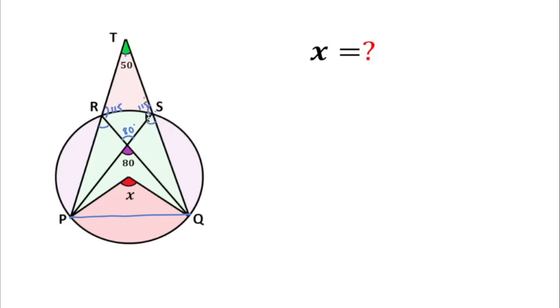If this angle is 115, then this angle should be 65 degrees by linear pair. This angle should also be 65 degrees. This is the angle half from the center of this angle by properties of a circle.